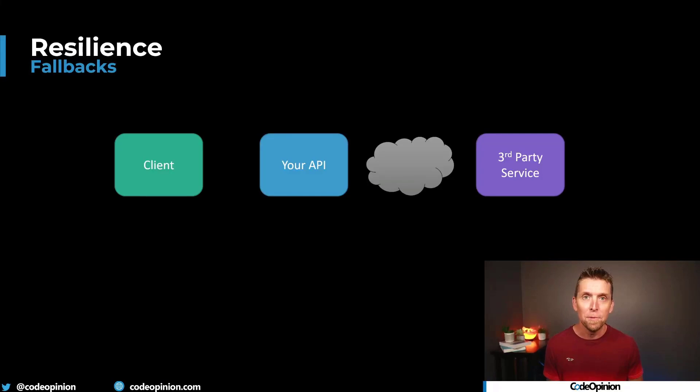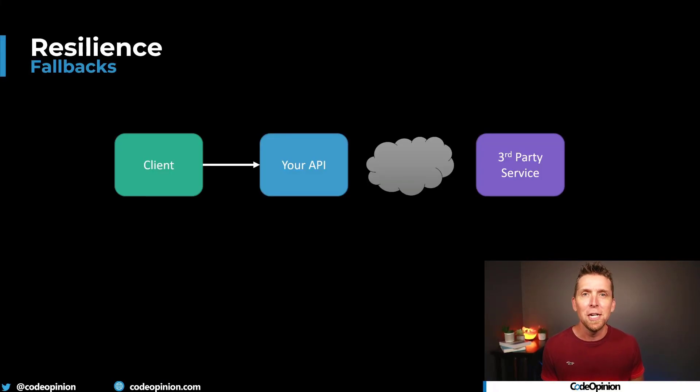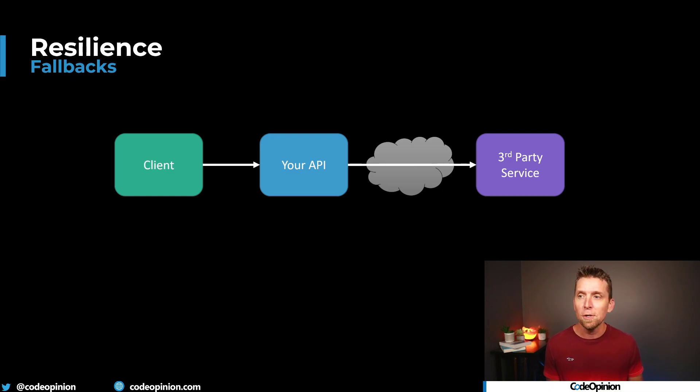Let's get right into it. The first tip is having a fallback. In any type of system you're likely going to need to leverage third-party services synchronously. This means that you have some client requests reach your API — let's say just an HTTP API that you're developing — and you need to reach out to some third-party service.